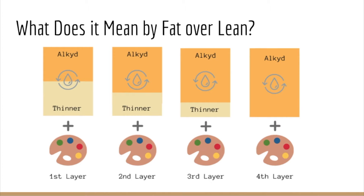When painting, remember that the bottom layer should always dry before the top, or else it will crack. Lower layers should always have more thinner and less oil medium. The upper layers should have more oil and less gamsol, which is a thinner. It's common for artists to mix equal parts of oil medium and thinner at the beginning stages, then slowly use less thinner in the mixture during later stages, and use only medium in the mixture for the finishing.